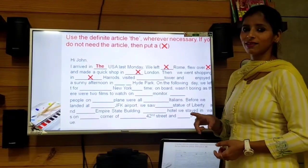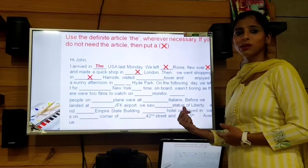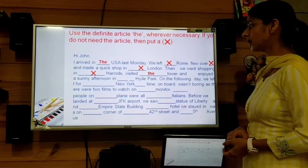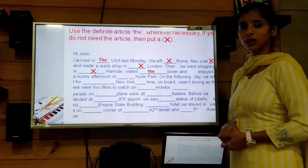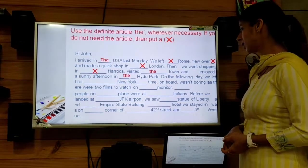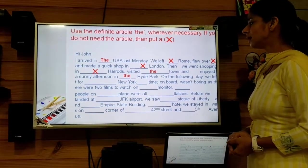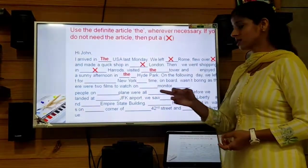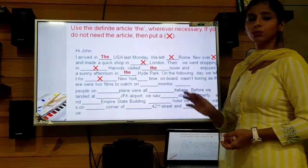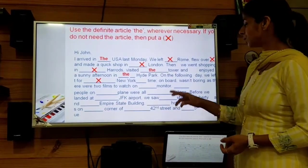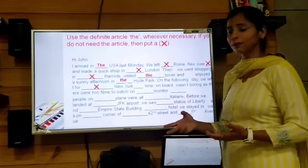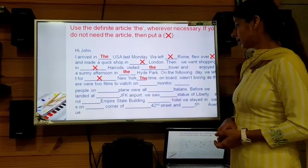Next: 'Visited ___ Taj' — we put 'the', because we are being specific about the Taj. So: visited the Taj. Then: 'enjoyed a sunny afternoon in ___ Hyde Park' — it is a famous park, so we put 'the'. On the following day: 'we left for ___ New York' — New York is the name of a city, so we put a cross. Then '___ time on board' — we are being specific about which time, so we put 'the'. The time on board.